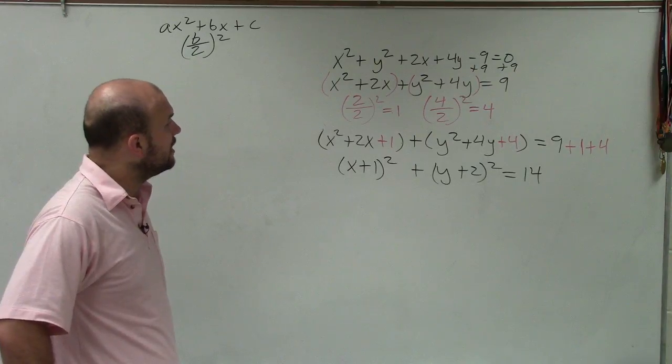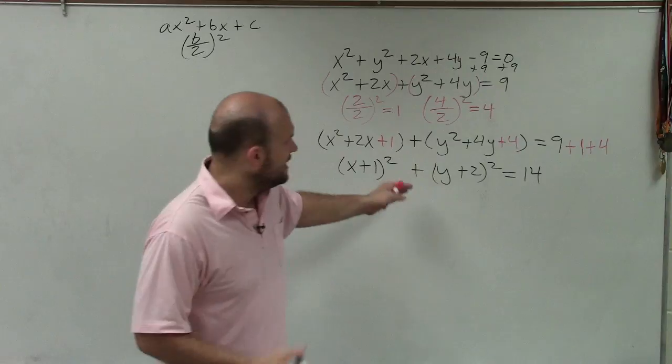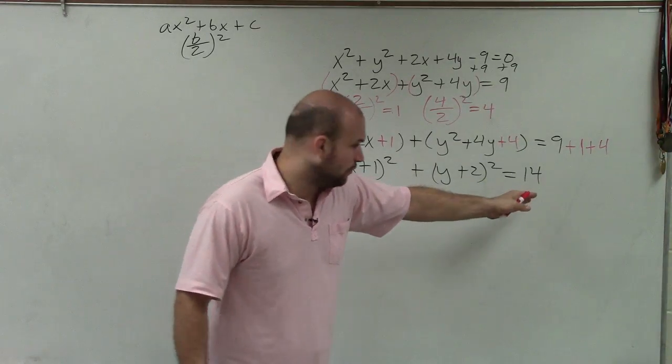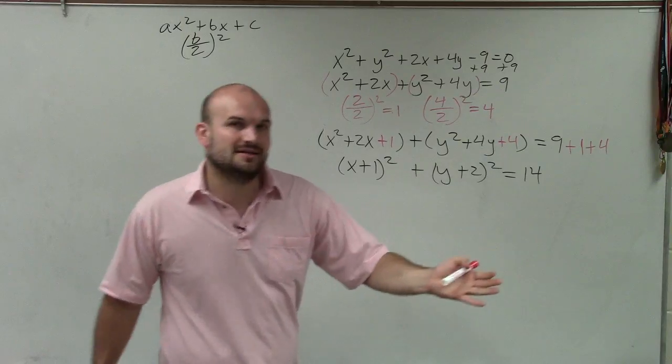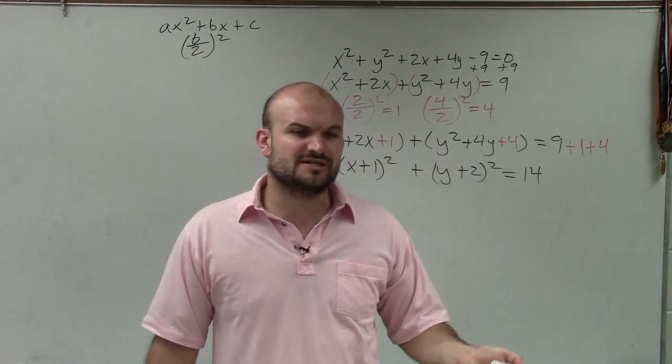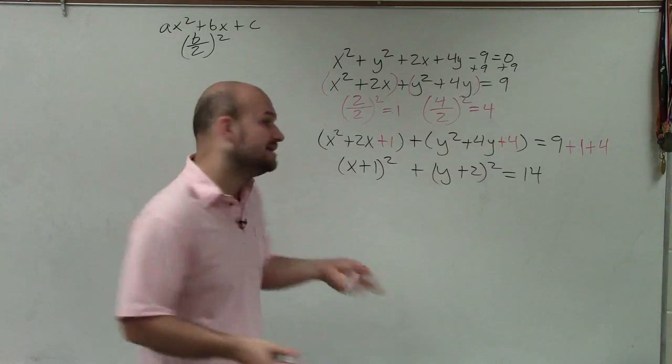So now what I need to do is you can see that this is an equation where if I divide by 14, set this equal to 1, I am going to have my a and my b are going to be exactly the same. That means my vertices and my co-vertices are going to be the exact same distance from the center. Therefore, this is a circle.